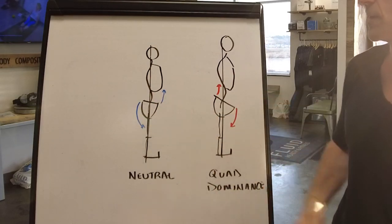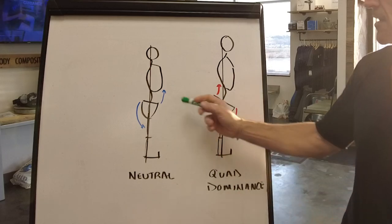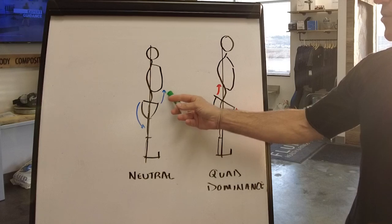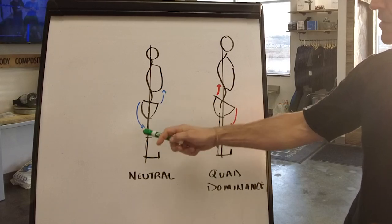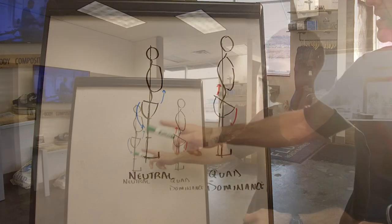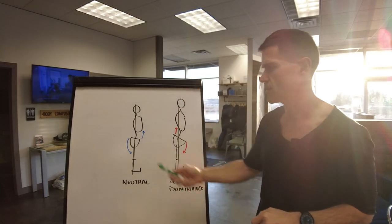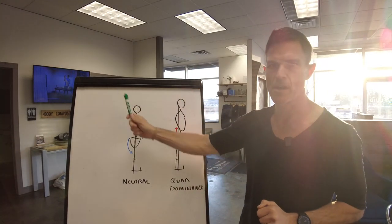Those are facilitated through the abdominals, specifically the transverse abdominus, the deeper unit muscle, and then the glutes on the back side. Both of those muscles have a posterior inferior force on the hips and help keep your body upright when you're moving.